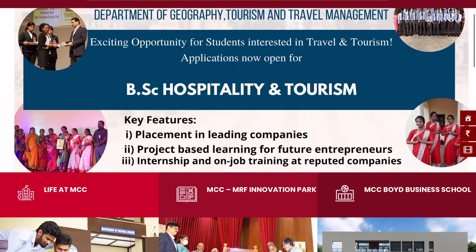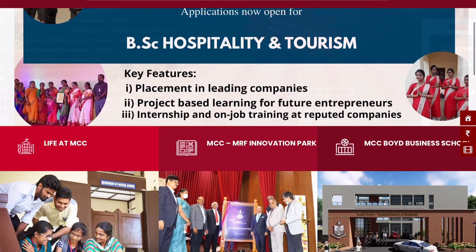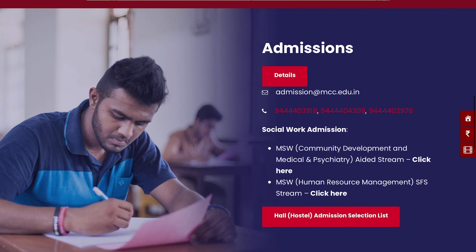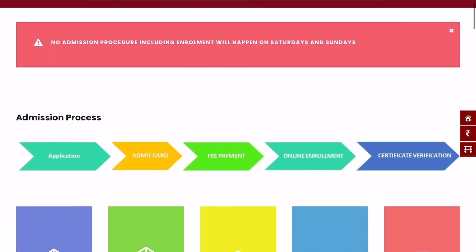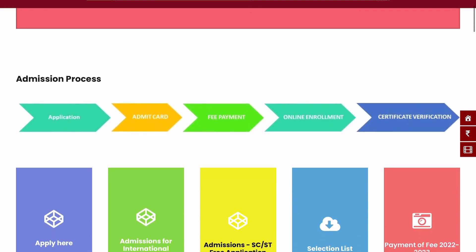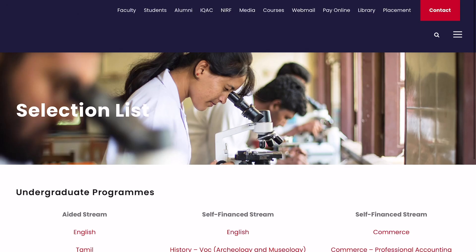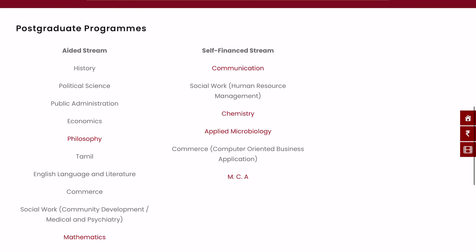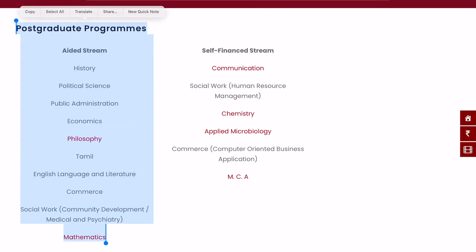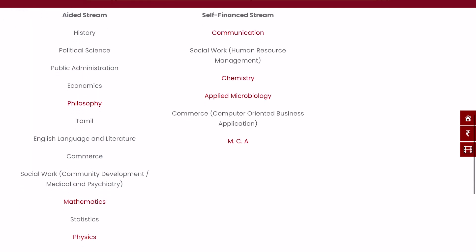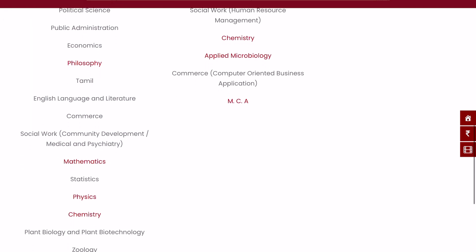So if you go down here, you can see the details. Go down and click on the selection list. Here you can see the postgraduate programs — this is the edit stream courses.